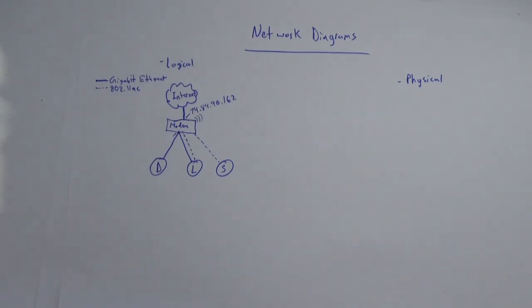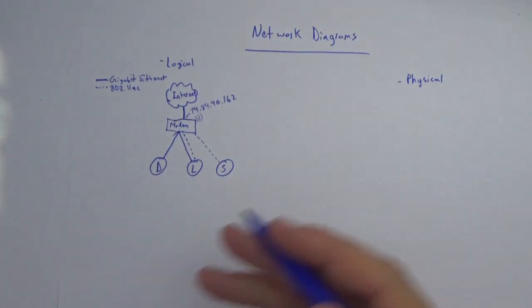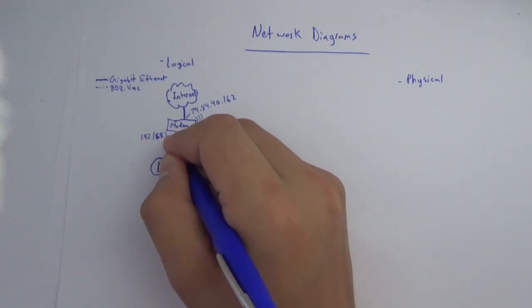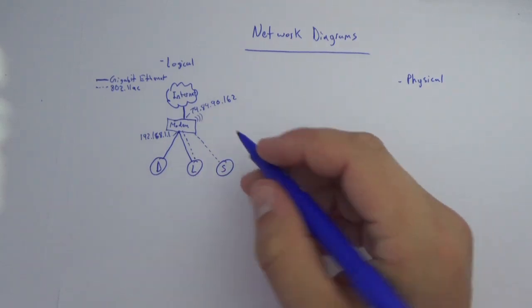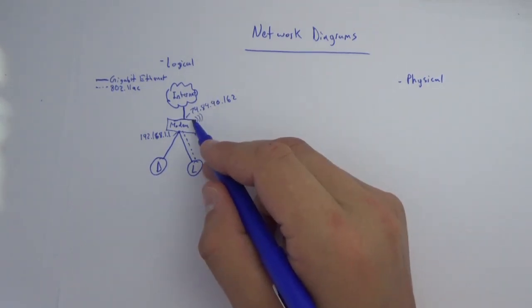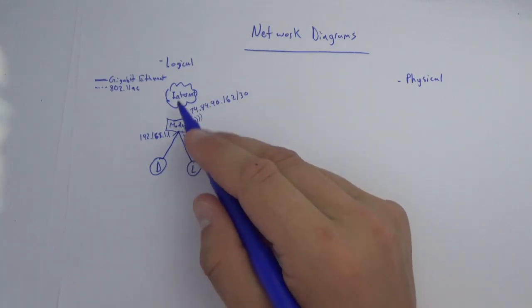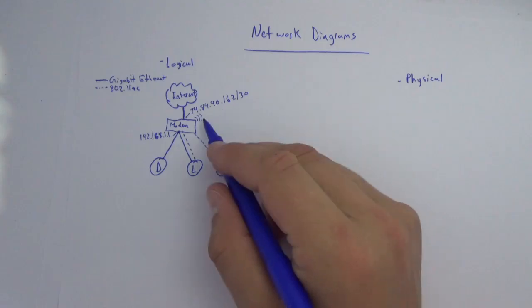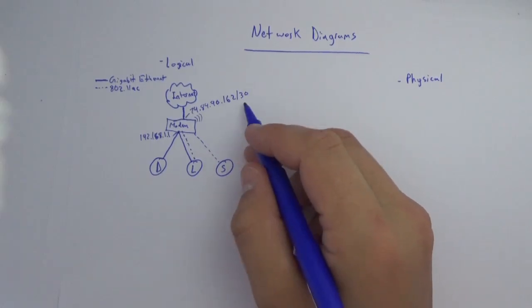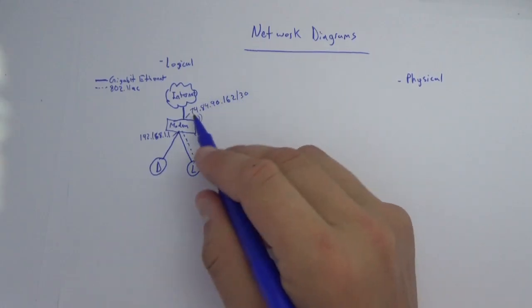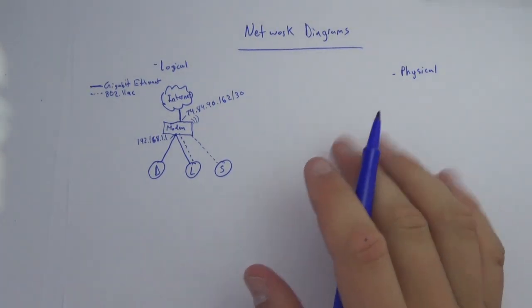Remember, this is not just a modem — it's a modem, router, switch, and wireless access point, a super modem. So inside this modem we've got an internal network, and for a home network that would be something like 192.168.1.1. We want to include slash notation on all of these IP addresses. Public IP addresses on a home network are often on a /30 network, which has room for only two devices. On a corporate network it might be a /27 or larger.